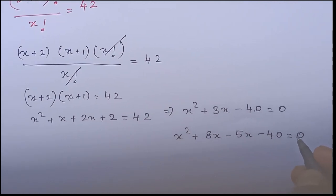So now you can take x commonly outside. So x here have 8. Here you can take minus 5 commonly outside x plus 8 is equal to 0.